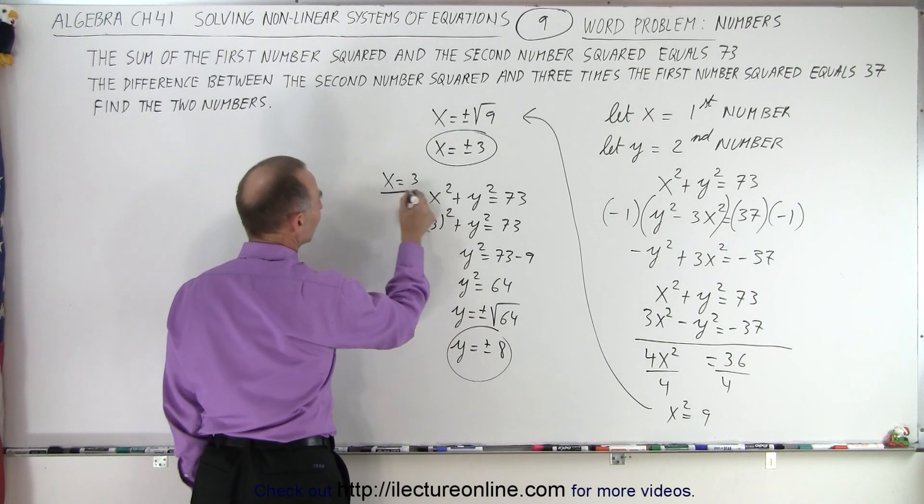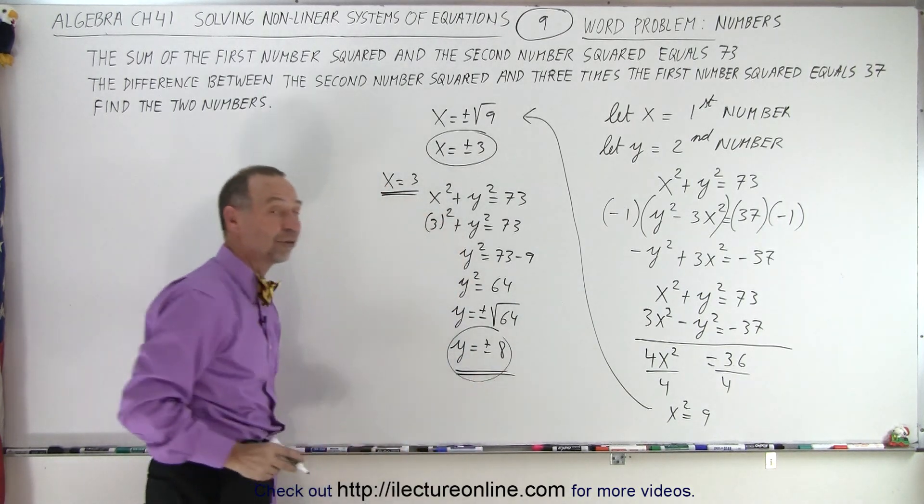Then y is equal to plus or minus the square root of 64 or y equals plus or minus 8. So that means if x is equal to 3, we have two possible solutions for y.